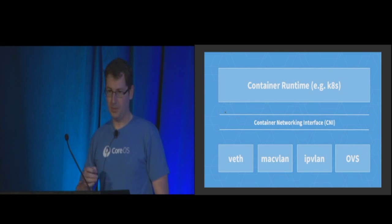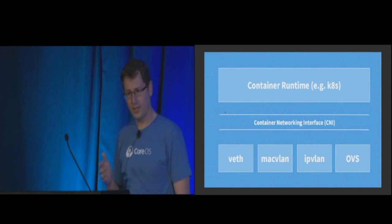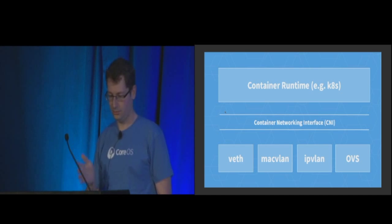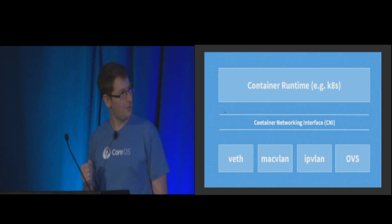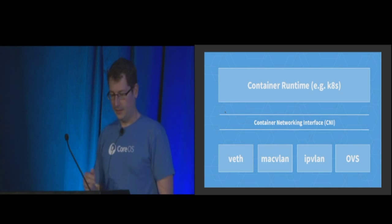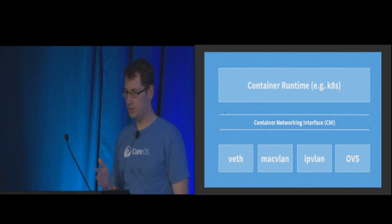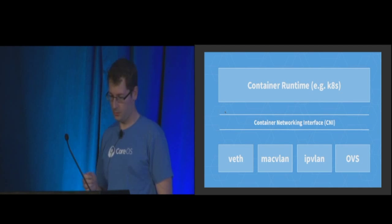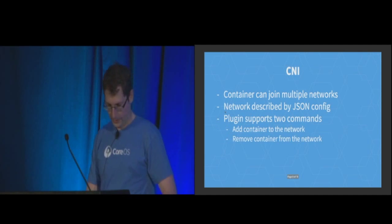So if you're going to have plugins, we need some kind of an interface — a protocol sitting between the container runtime, like Kubernetes, Docker, or Rocket (a container runtime made by CoreOS), and these low-level network plugins. Container Networking Interface, CNI, is a proposal and specification that CoreOS along with the community has put out to try to define what this interface looks like.